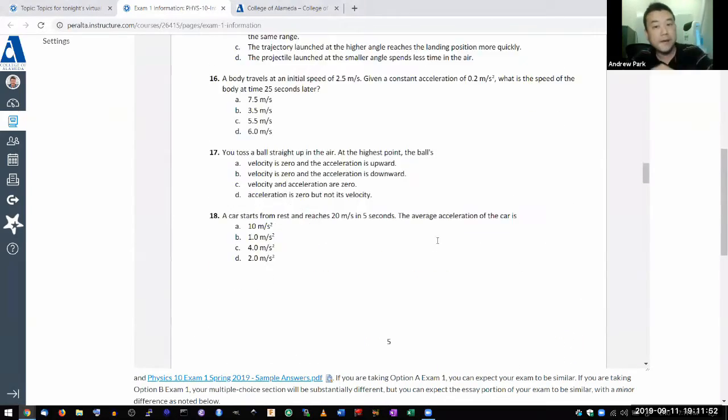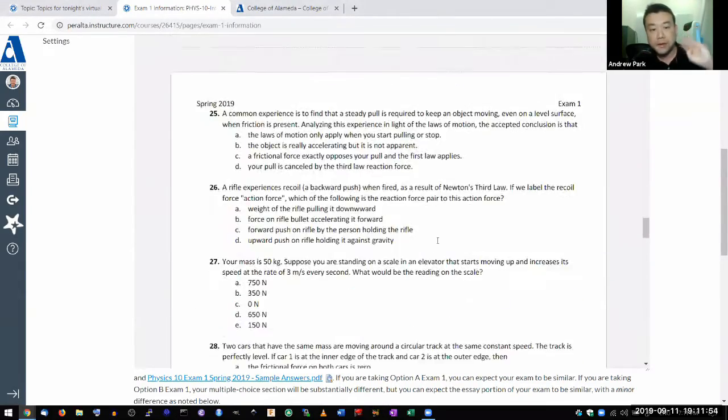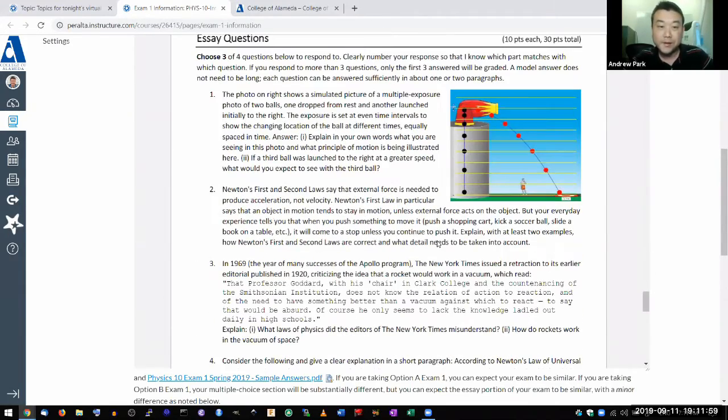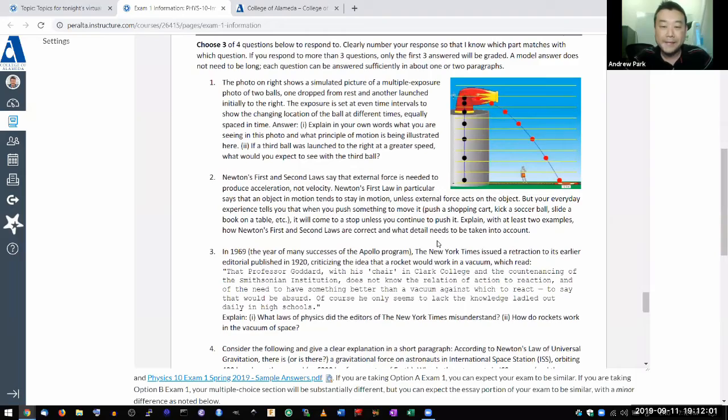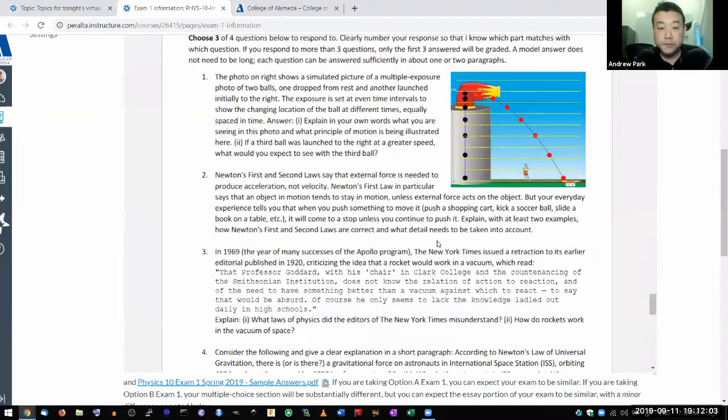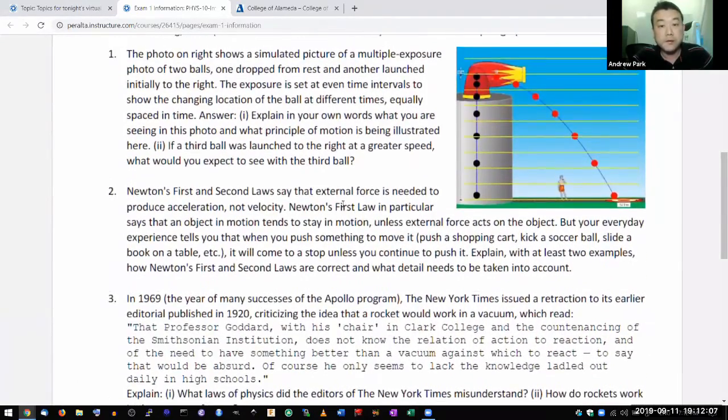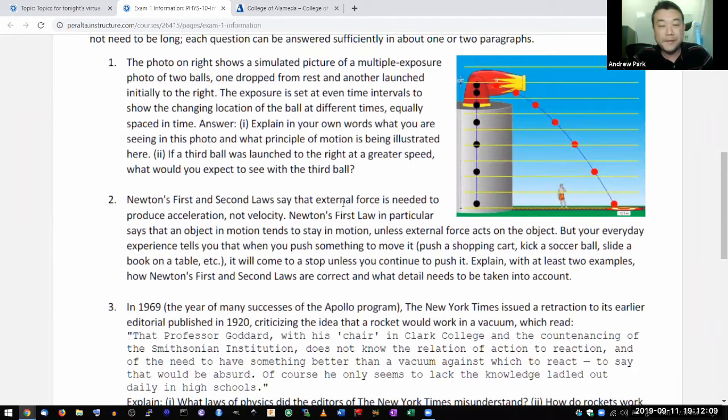So the online system pulls three questions at random and gives to you as the question. And in-person exam, there's a printed version like this one that you get, and both of them are pulled from the same sources. So they have the same types of questions, same difficulty of questions. So even though this particular resource says it's option A exam, it's equally useful for the option B exam.